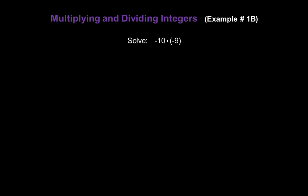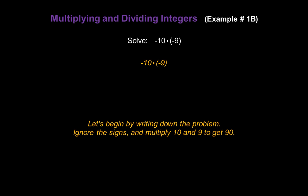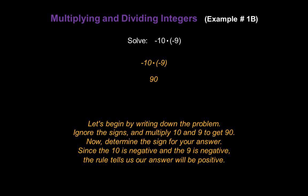Let's solve negative 10 times negative 9. Ignore the signs to start and multiply 10 and 9. We know that gives us 90. Now determine the sign on your answer. Since the 10 is negative and the 9 is negative, the rule tells us our answer will be positive. So the answer is just 90.